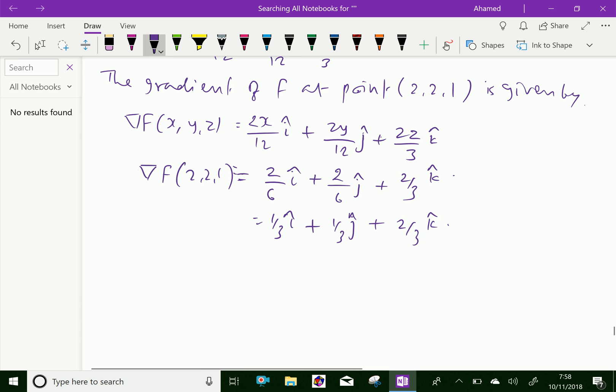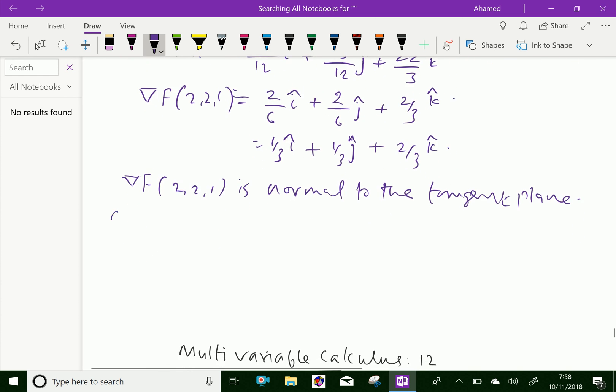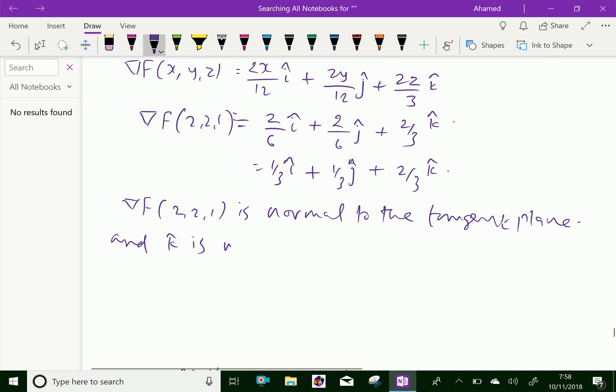Therefore, gradient F at (2, 2, 1) is normal to the tangent plane, and vector k is normal to the xy plane, because vector k is perpendicular, so it is normal to xy plane.